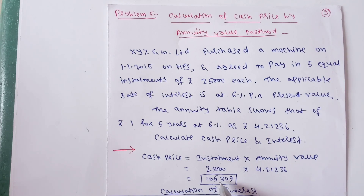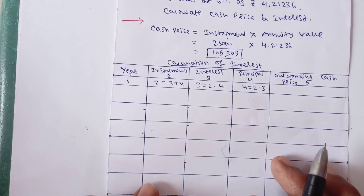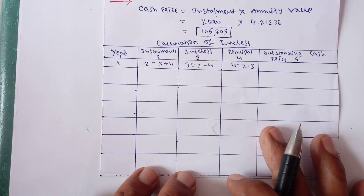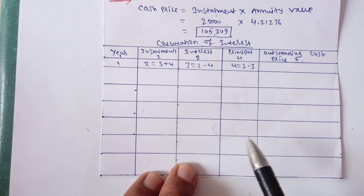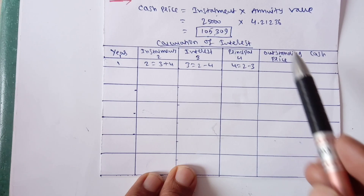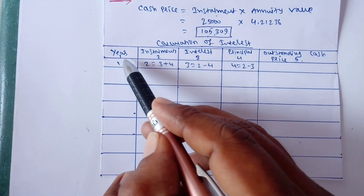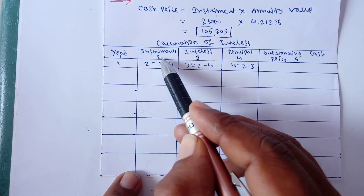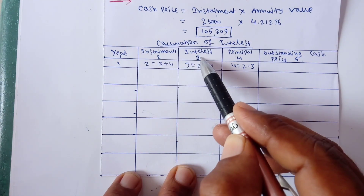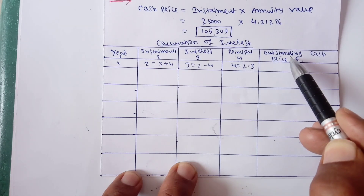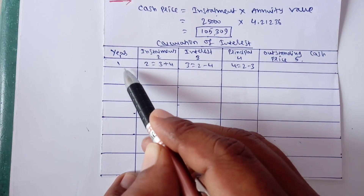Now that cash price is available, we have installment, cash price, and rate of interest. We have to calculate interest using the same table format as Case 1. The columns are: Year, Installment, Interest, Principal, and Outstanding Cash Price. Column 2 (installment) equals column 3 plus column 4 (interest plus principal). Interest is calculated at 6% on the outstanding cash price. Principal equals installment minus interest (column 2 minus column 3). Outstanding cash price is updated each year.